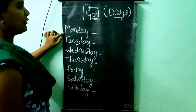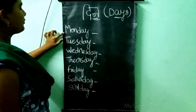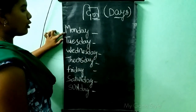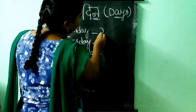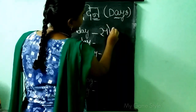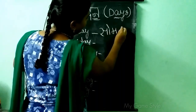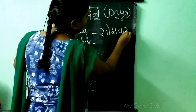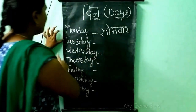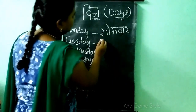There are 7 days in a week. We will start from Monday. Monday — Soomwar. Tuesday — Mangalwad.